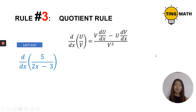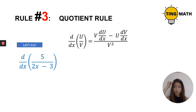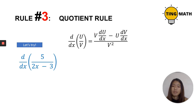Rule number three is the quotient rule. It states that for this fraction U over V, remember: the denominator rules. We are going to start with the denominator, square it at the bottom, and then the denominator will go on top. We differentiate the top, which is U, and then minus U multiplied by the derivative of the bottom.